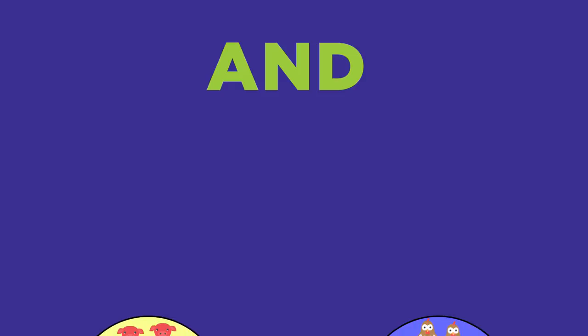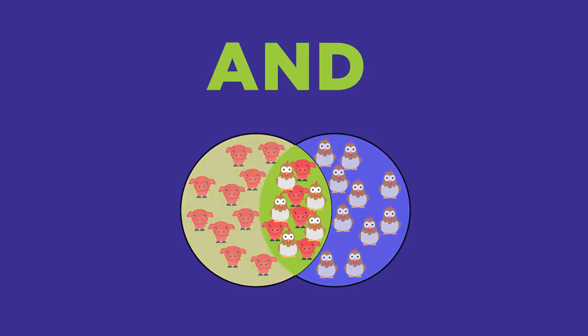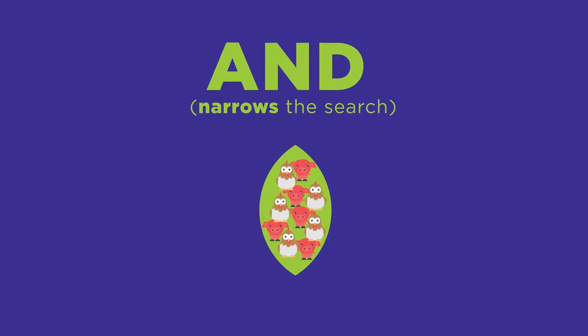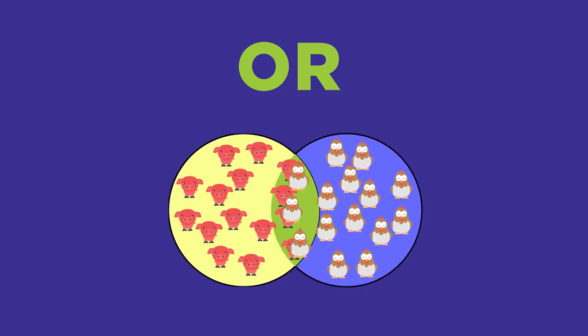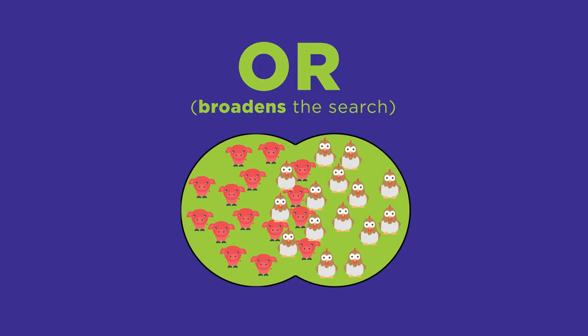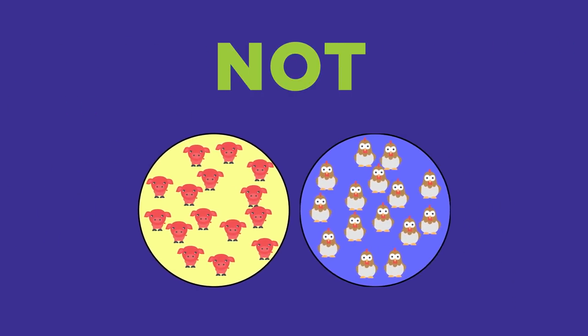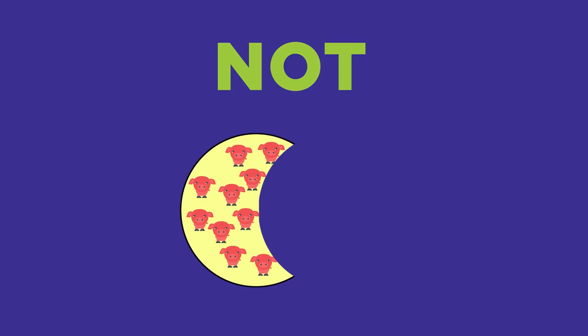In part one, you learned how to use the three Boolean operators: AND, OR, and NOT. Let's quickly review those. Using AND between two search terms tells the system that both search terms must be present to be included in the results — AND narrows the search. Using OR between two search terms tells the system to include results that have one term, or the other term, or both of them — OR broadens the search. Using NOT between two search terms means that the first term must be present, but the second term cannot be present — NOT narrows the search.